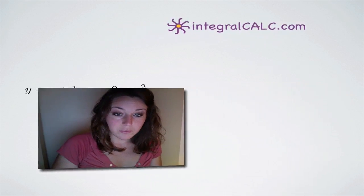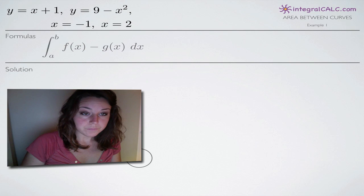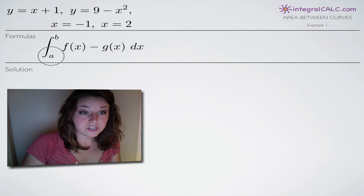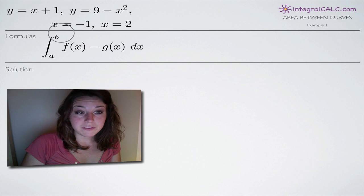So the formula that we're going to be using for this problem is the formula we always use for area between curves problems. And we're going to be integrating on the range a to b, and our limits of integration a to b are going to be negative 1 to 2, which have already been provided for us.